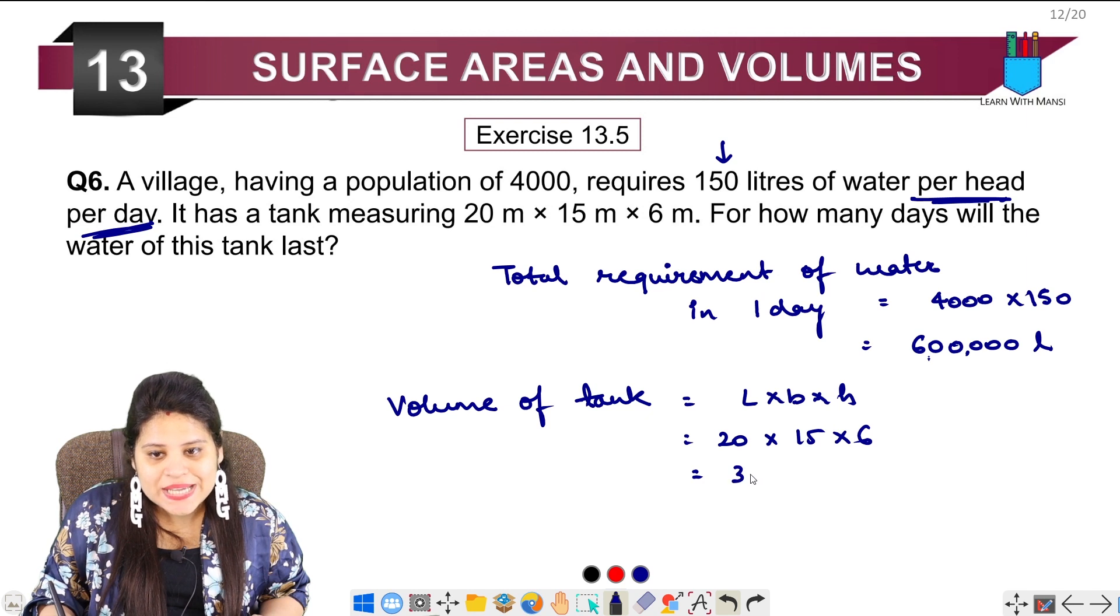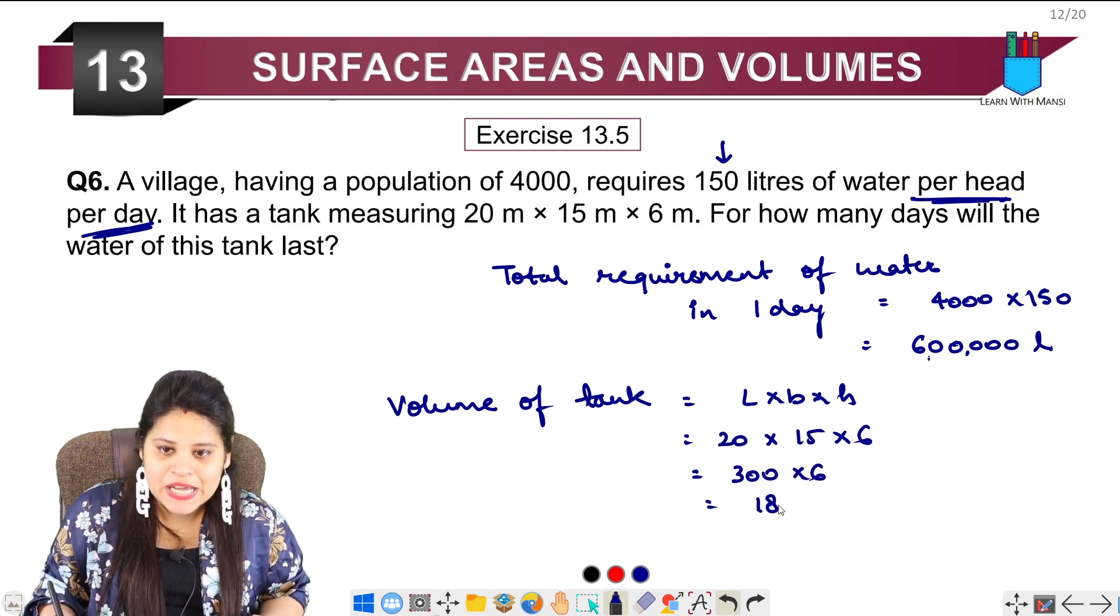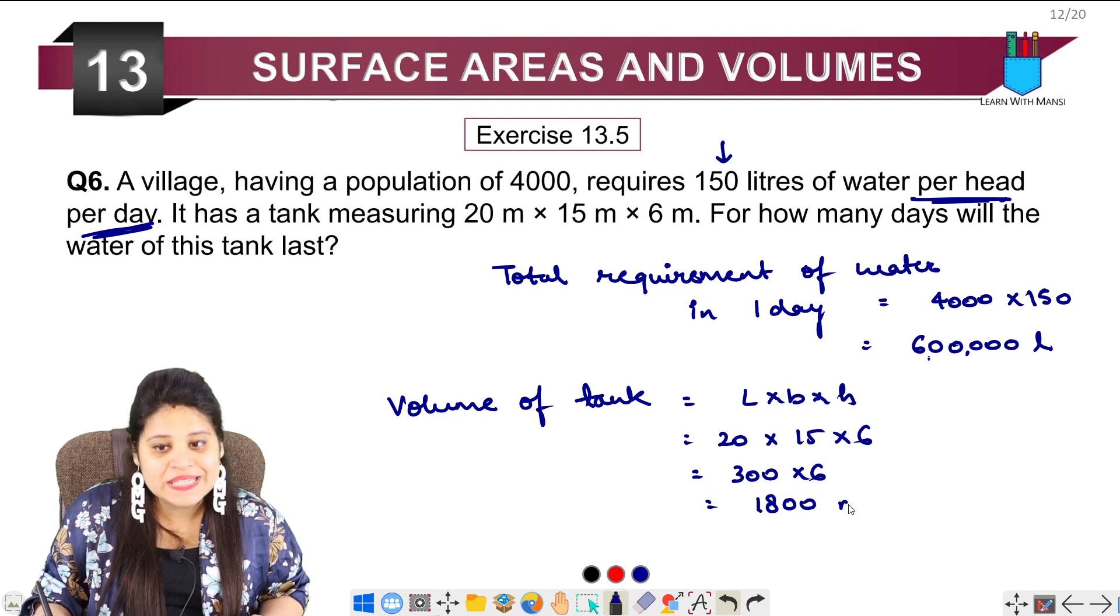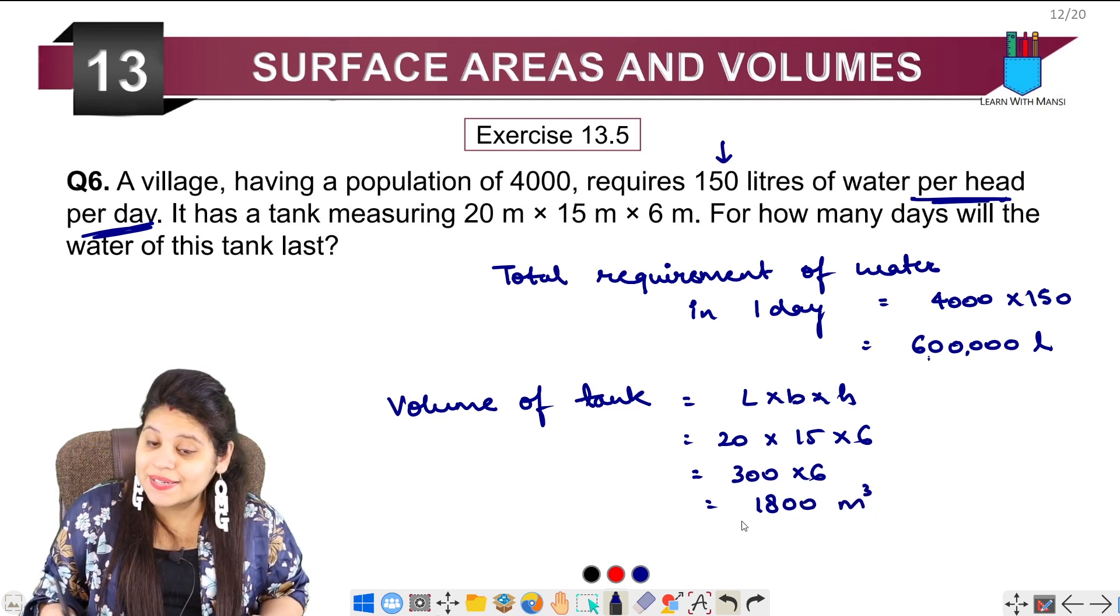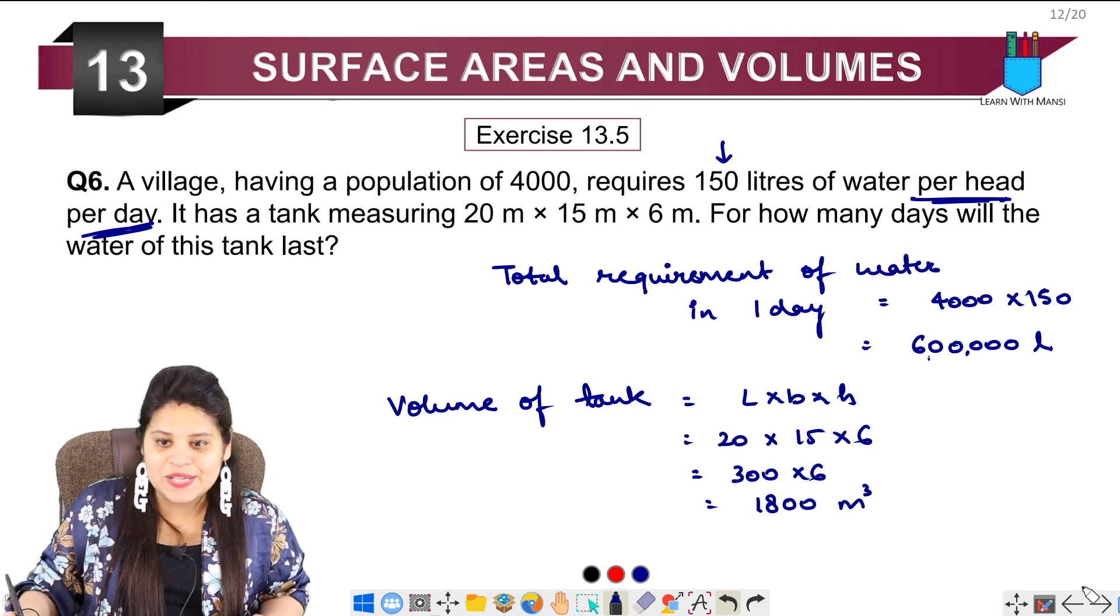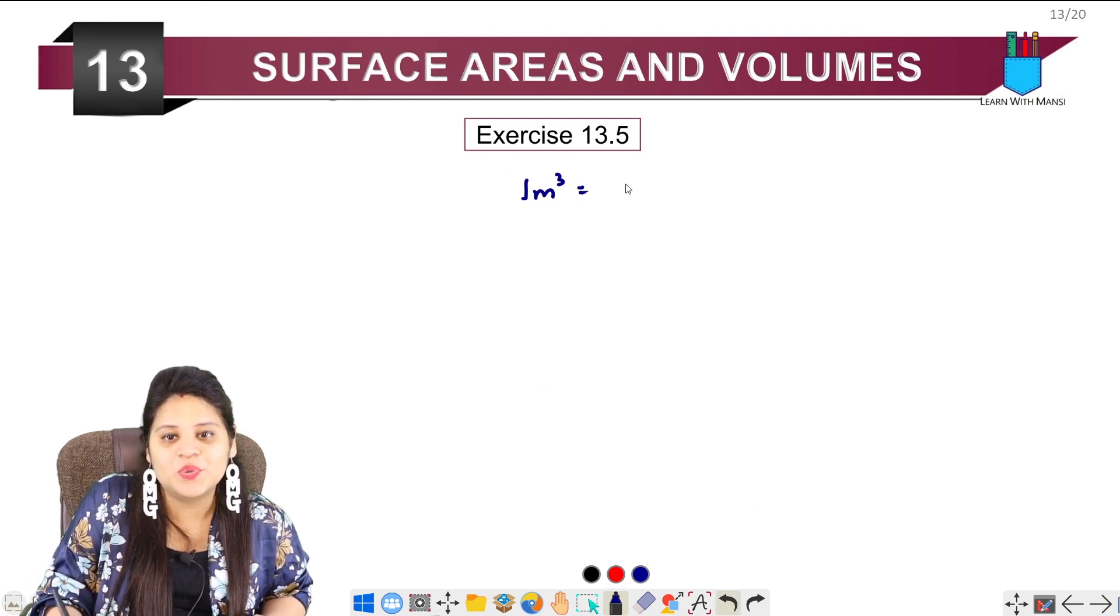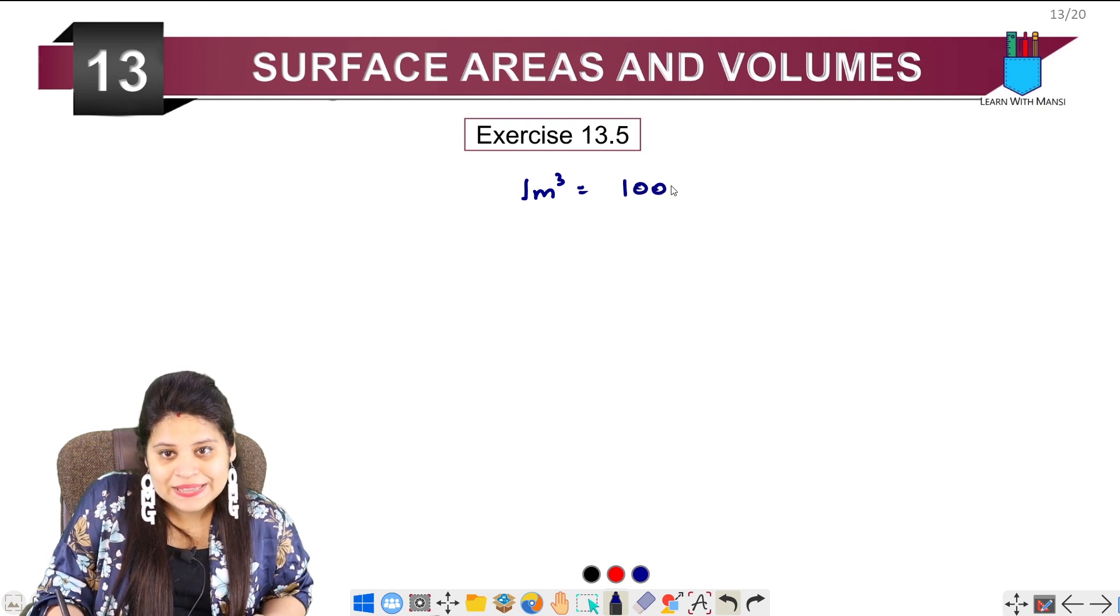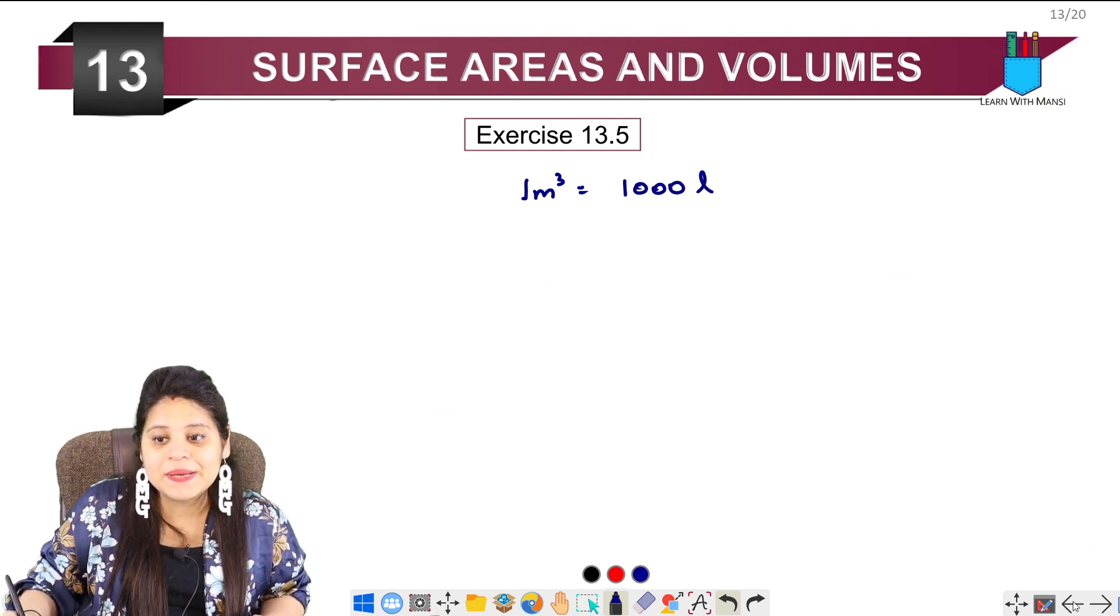So this will be our 15 into 2 is 30, 300 into 6 is 1800. So 1800 meter cube. What do we have to keep in meter cube? In meters you have to convert to liters. So we know that 1 meter cube is 1,000 liters.